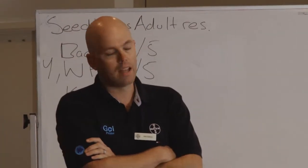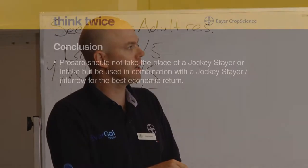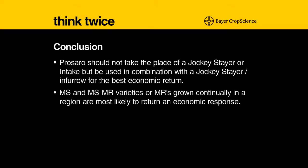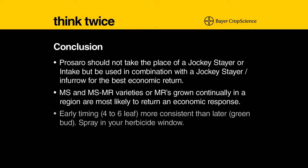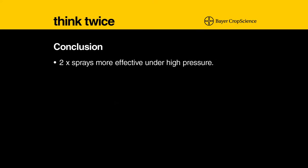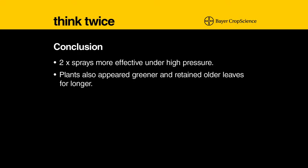Concluding from the perspective of Prosaro with blackleg and canola: it doesn't take the place of an in-furrow or on-seed treatment for seedlings — the strength is in the combination. We know MS and MS-to-MR varieties give consistent responses, but MRs can break down if grown consistently. Getting in early with the foliar spray works much better for blackleg, particularly in areas with high spore showers, and there is a rate response under higher pressure. Two sprays is more effective, but the key timing is that four to six leaf stage. Canopy retention from fungicide application is also a critical benefit.